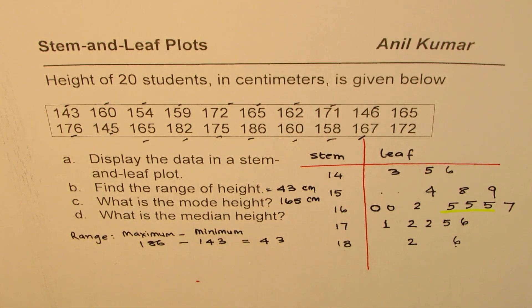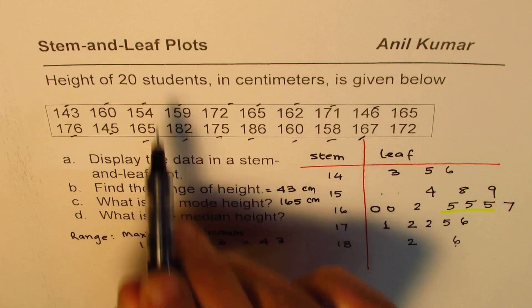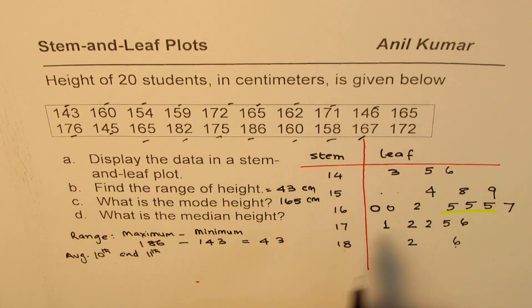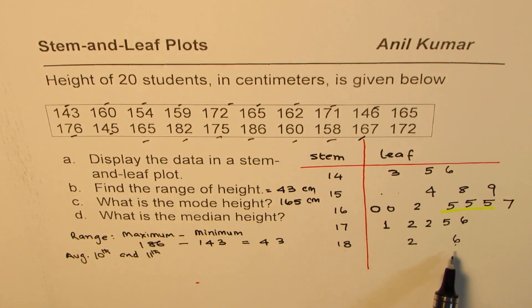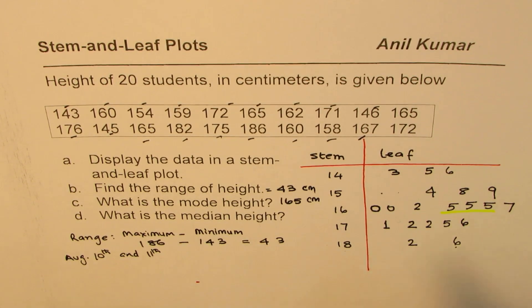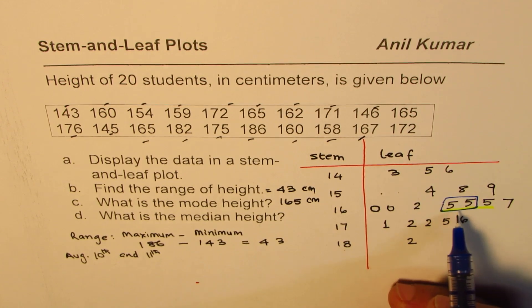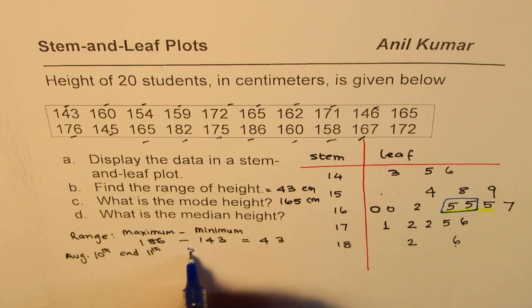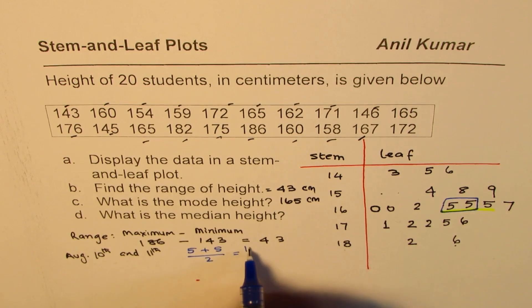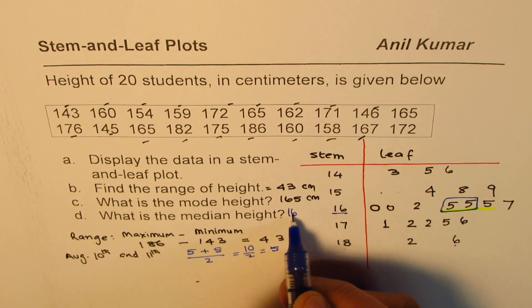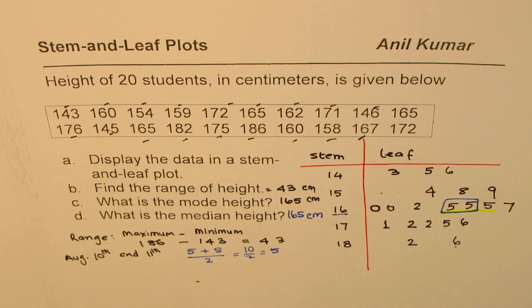What is the median? The median is the center value. Since we have 20 students, the median is the average of the 10th and 11th values. Once arranged in increasing order, we count: 1, 2, 3, 4, 5, 6, 7, 8, 9, and 10 and 11. Those values are both 5 and 5 — for stem 16. The average of 5 and 5 is 5 plus 5 divided by 2, which is 5. So the median is 165 centimeters.